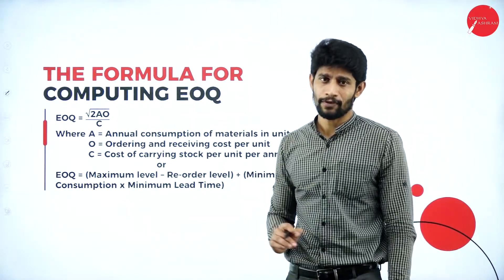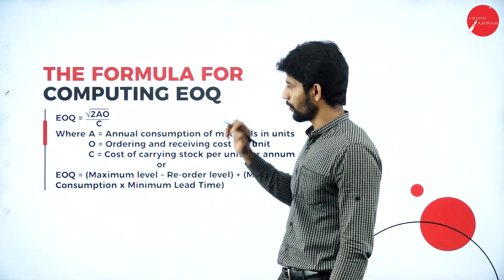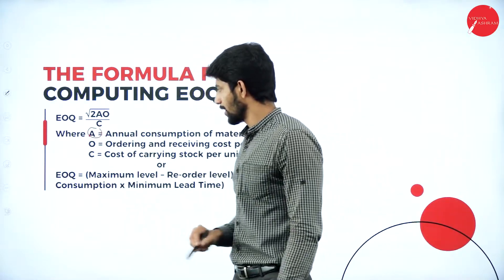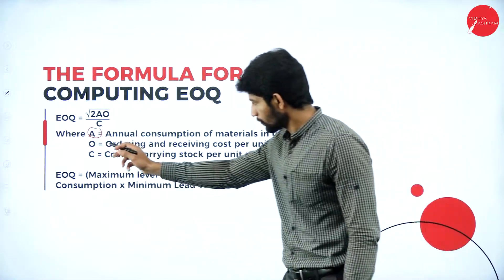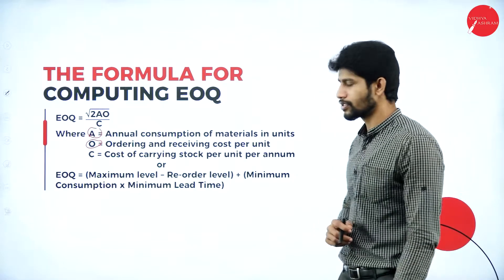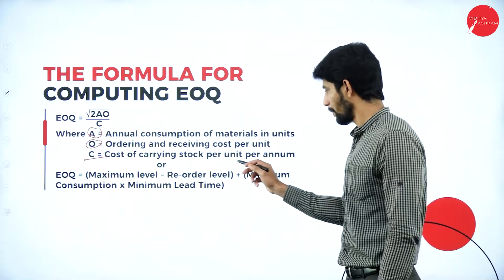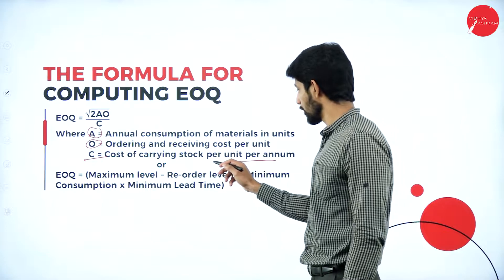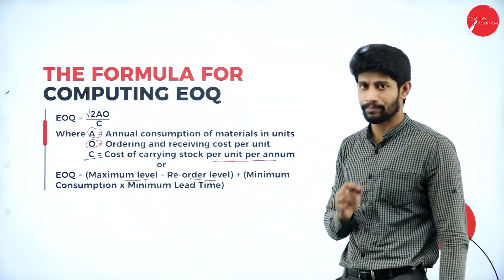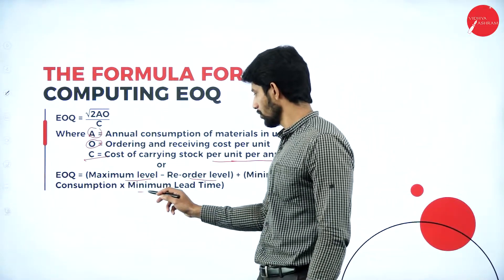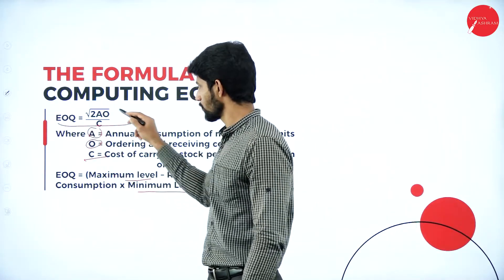We have the formula to compute EOQ: EOQ equals the square root of 2AO divided by C. Here, A stands for annual consumption of materials in units; O stands for ordering and receiving cost per order; and C stands for cost of carrying stock per unit per annum. There is also a second formula: EOQ equals maximum level minus reorder level plus minimum consumption into minimum lead time. But usually we use the first formula in all scenarios.